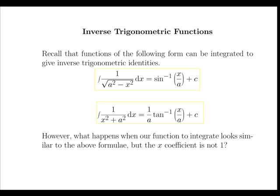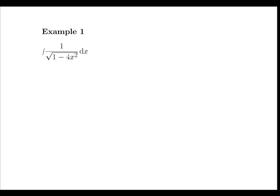However, what happens when a function to integrate looks similar to the above but the x coefficient is not 1? Consider the example: the integral of 1 over the square root of 1 minus 4x squared. In this case we have something that looks similar to the integral of 1 over a squared minus x squared, but we have this 4 term in front of the x.